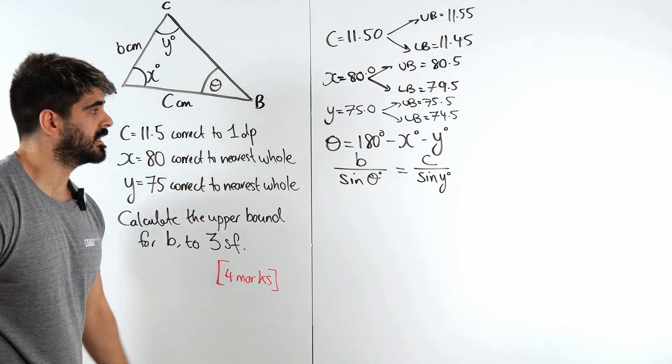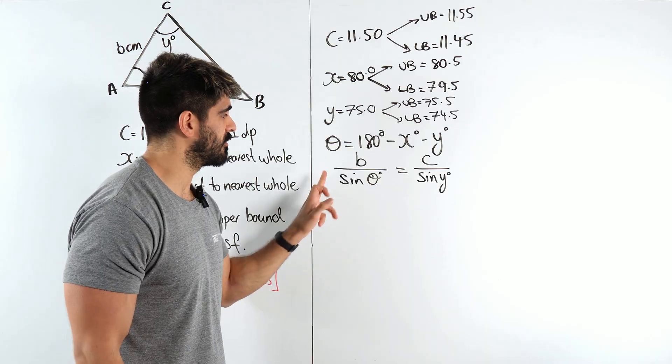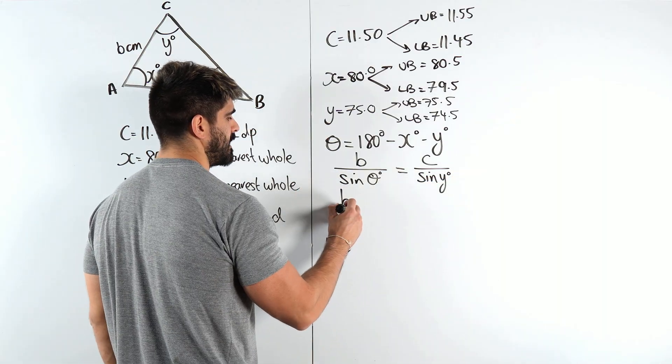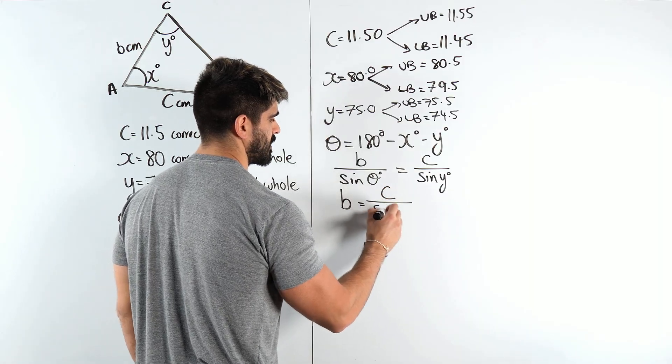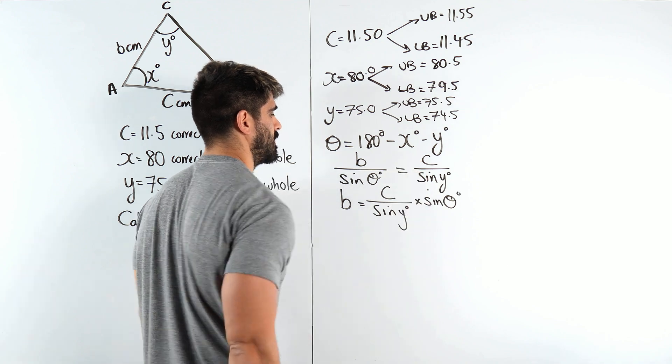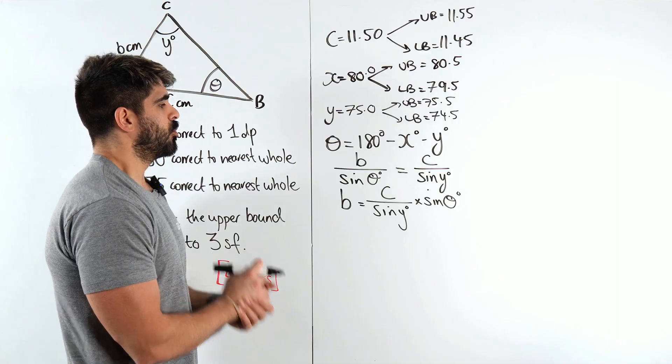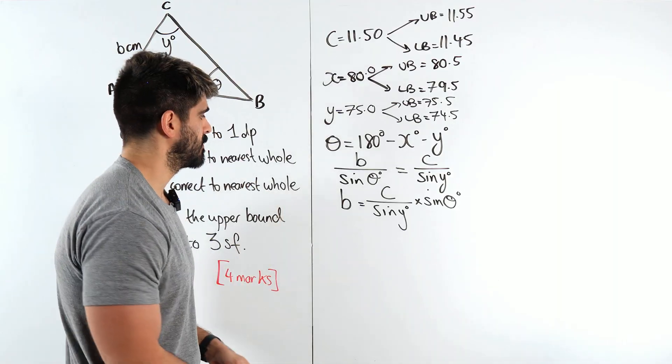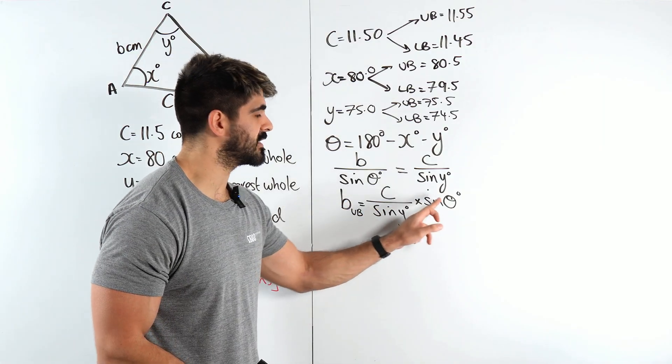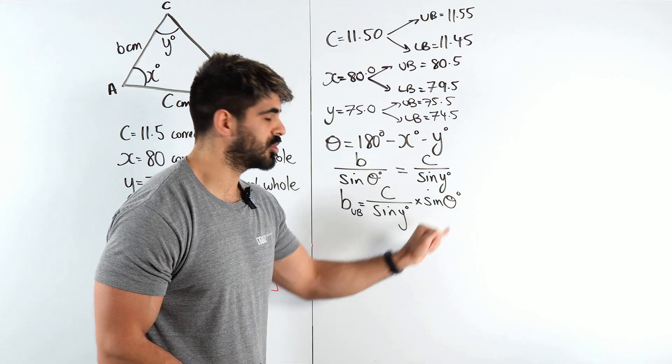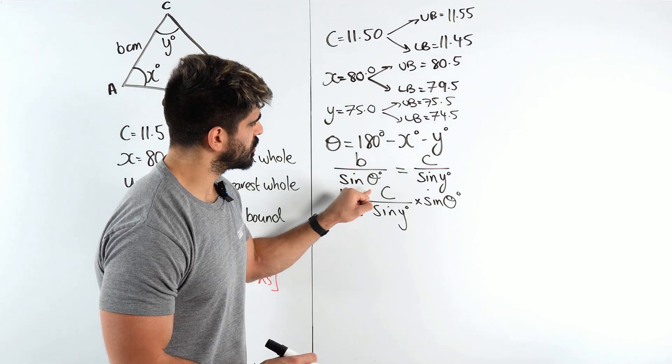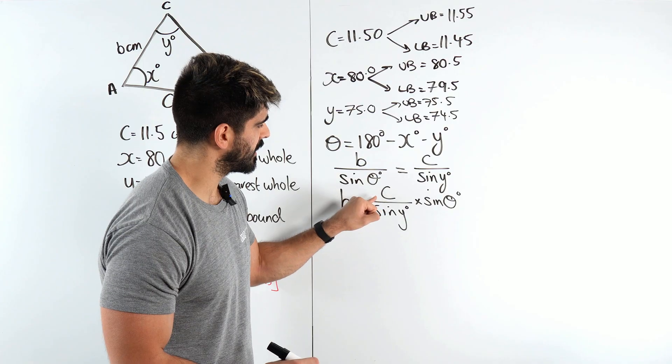I'm going to rearrange for b. I'm going to multiply through by sine of theta. So I'm going to get b is c over sine y times sine of theta. Now we want b to be as large as possible. We want it to be the upper bound. We're going to have to go term by term and decide, do we want these unknowns to be big or small? If you want b to be large, do you want to do big divided by big, big divided by small, small divided by big, or small divided by small?